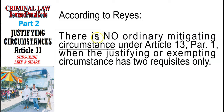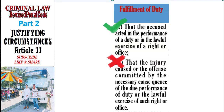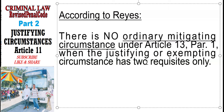According to Reyes, there is no ordinary mitigating circumstance under Article 13, Paragraph 1 when the justifying or exempting circumstance has only two requisites. When there are only two requisites and one is present, it already falls under Article 69 as a privilege mitigating circumstance — not an ordinary mitigating circumstance.